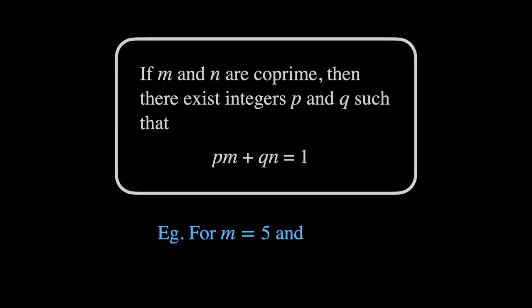For example, let M equal 5 and N equal 9. Then we find 2 times 5 plus minus 1 times 9 equals 1. Here P is 2 and Q is minus 1.